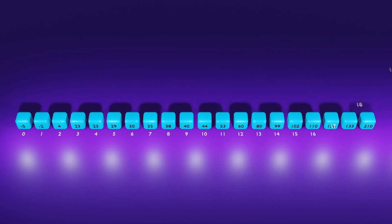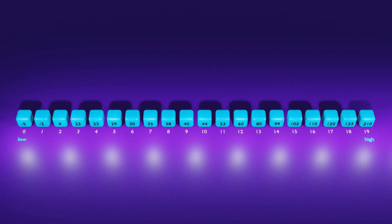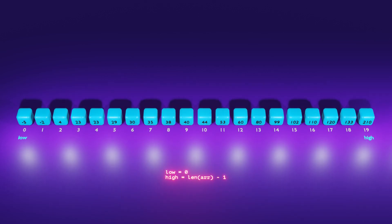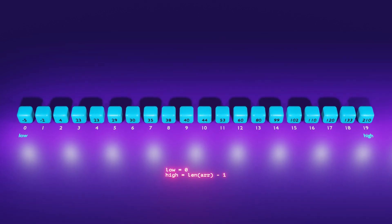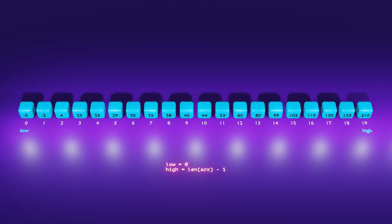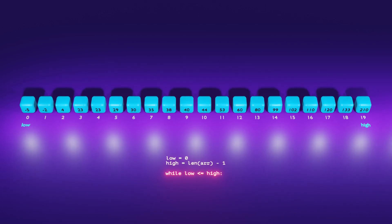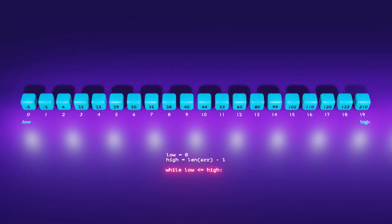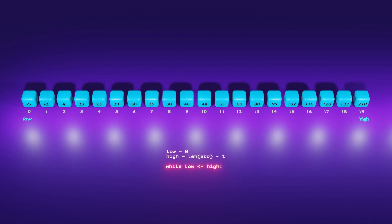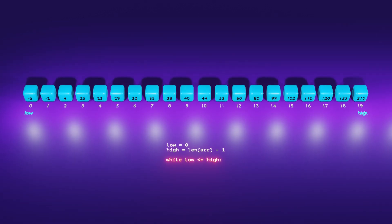Let's begin coding by considering an example of an array sorted in ascending order. We use two index variables, low and high. Initially, low is set to zero, indicating the first element, while high is set to length of array minus one, representing the last element of the array. We then begin a while loop with the condition low is less than or equal to high. This ensures that the loop continues as long as the condition is met, allowing us to search within the specified range.